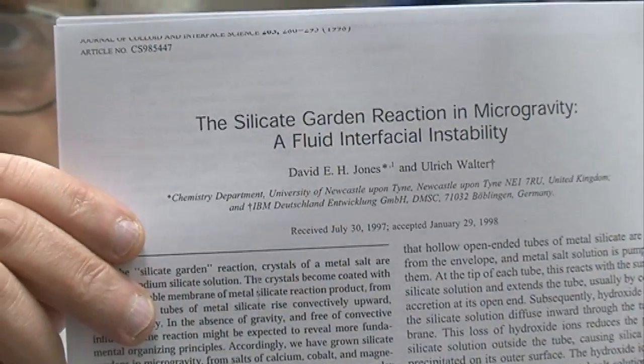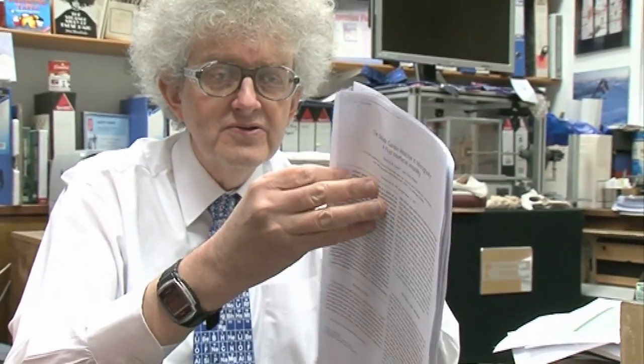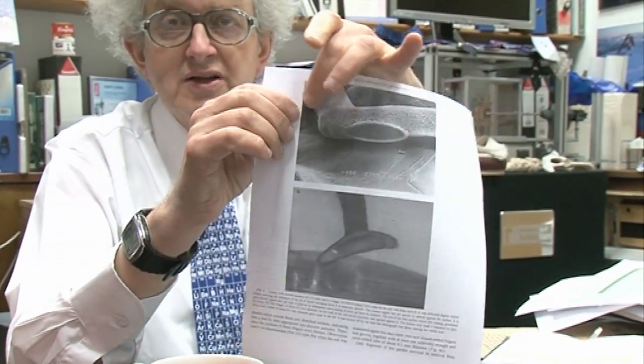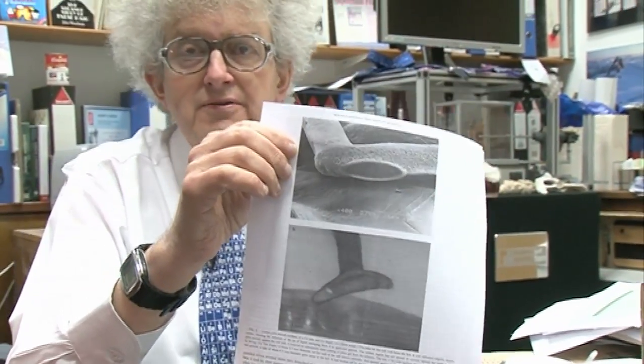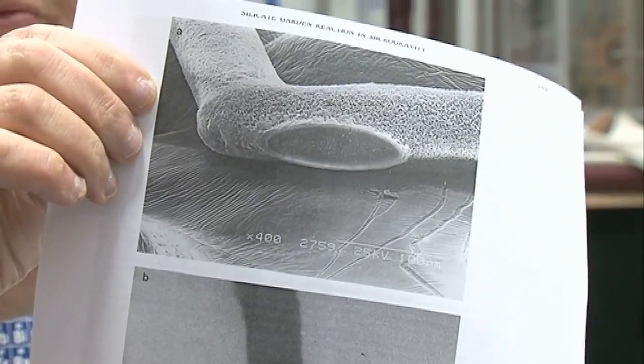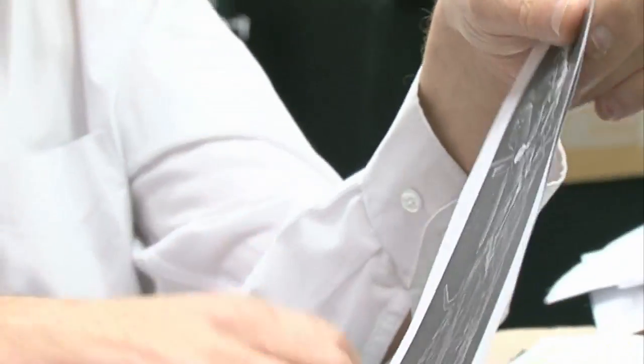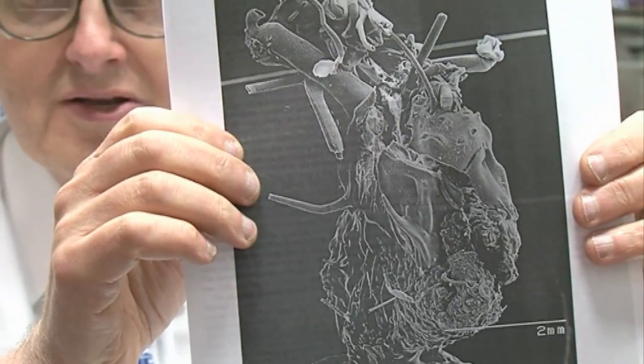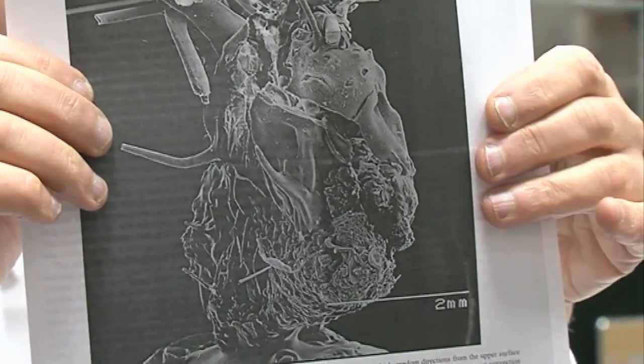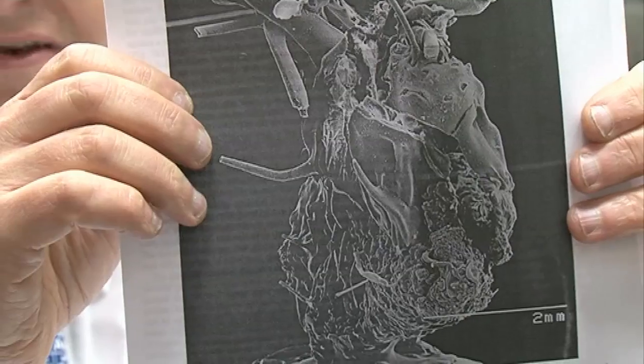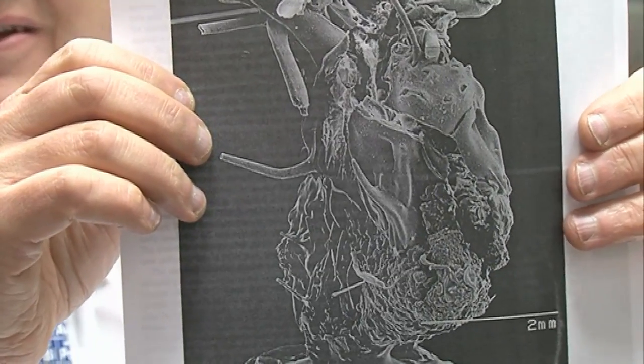He published quite a serious scientific paper. What was really interesting was the weird shapes that he got. The first few gardens were a bit boring. He got these rather fat tubes coming out. In the next garden, in his cobalt garden, he got something that looked really quite exciting. Looks like some weird organ that you've taken from some sort of creature.